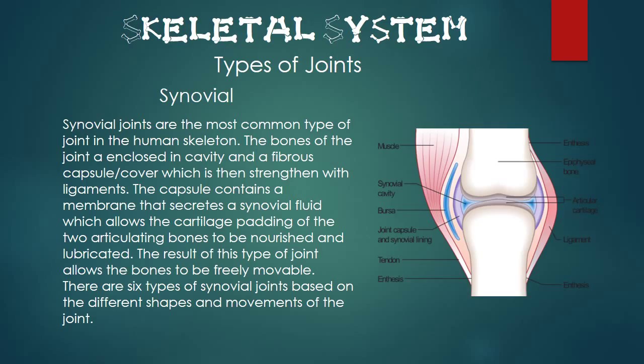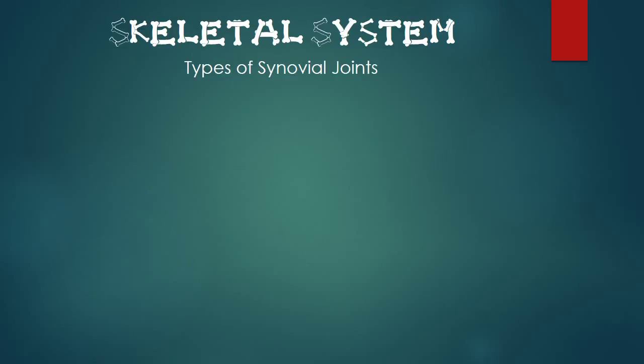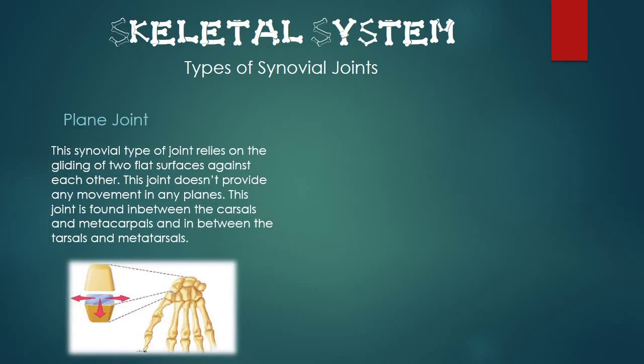There are six types of synovial joints based on the different shapes and movements of each joint. The first type of synovial joint is the plane joint. This type relies heavily on the gliding of two flat surfaces against each other. This joint does not provide movement in any planes and is found in the intercarpals and intertarsals.